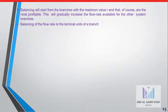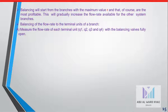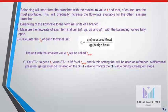Balancing the flow rate to the terminal units of the branch: measure the flow rate of each terminal unit Q1, Q2, Q3, Q4 with the balancing valves fully open. Calculate the R_u of each terminal unit: R_u = Q_m / Q_p. The unit with the smallest R_u, called R_u minimum, will be the reference. Set ST1 to get R_u value of ST1 at 95% of R_u minimum and fix a setting that will be used as reference.